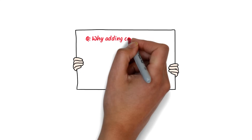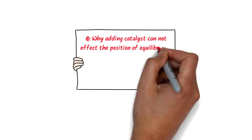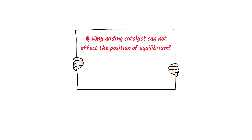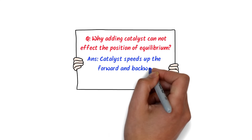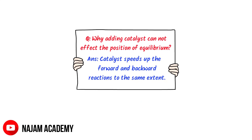Lastly, let me teach you one bonus question: why does adding a catalyst not affect the position of equilibrium? It is because the catalyst speeds up the forward and the backward reaction to the same extent. So adding a catalyst only speeds up the forward and backward reaction — it doesn't change the position of equilibrium. I hope that you have learnt all about Le Chatelier's principle.